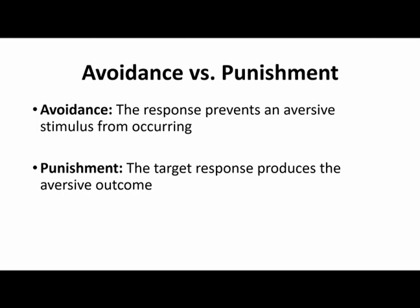What about punishment? For punishment, our target response, our behavior, is going to produce the aversive outcome. Punishment is more of a positive contingency — if I do this behavior, then a bad thing is going to happen. That bad thing could be the delivery of an aversive stimulus in positive punishment, or the removal of a good stimulus in negative punishment. In both cases, doing a behavior leads to some kind of bad outcome.